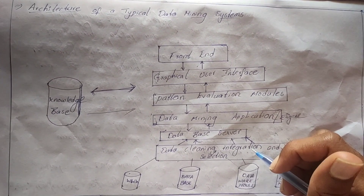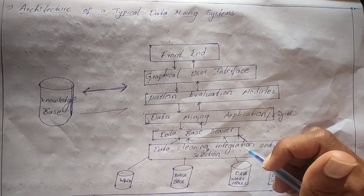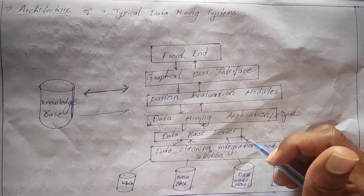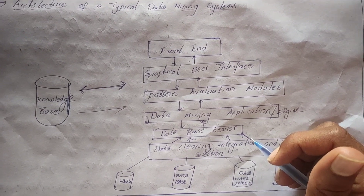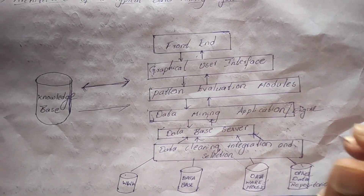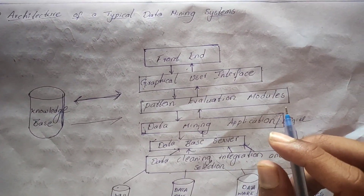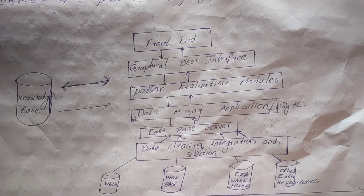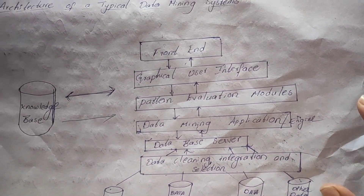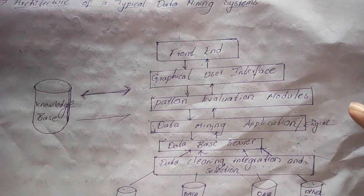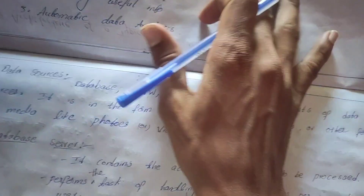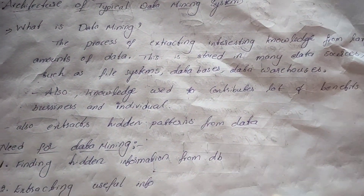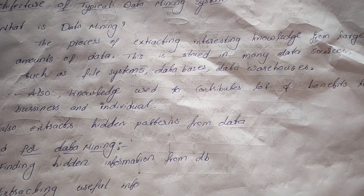Welcome back to my channel, The Machine Brain. Today we will discuss the architecture of a typical data mining system. Before going into that, let us discuss what data mining is and the need for the data mining process. Data mining is a process of extracting knowledge from large amounts of data.